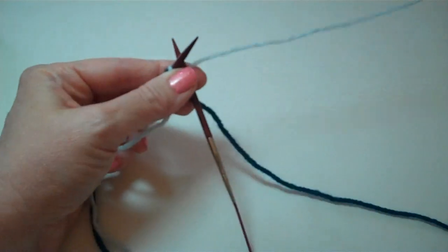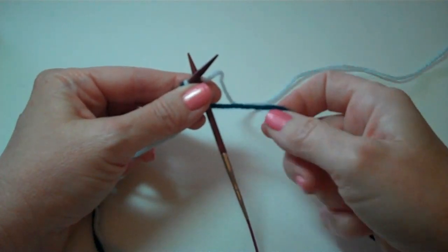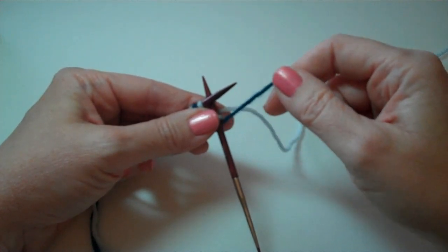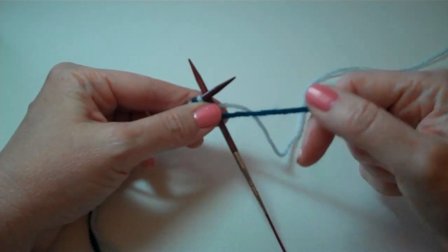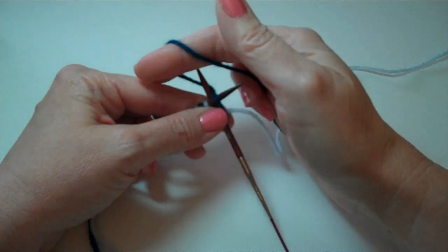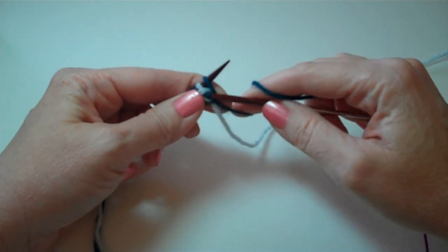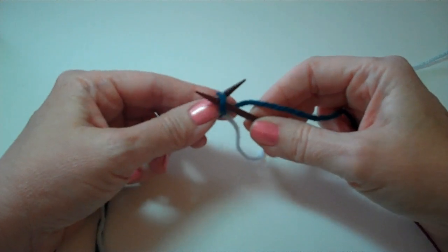For our second color we're going to pull the darker color up from underneath. I want to make sure that I'm pulling it up from underneath the other color. This is going to go over the top of the left hand needle around the right hand needle and we're going to pull it all the way down and through that loop, the previous loop.